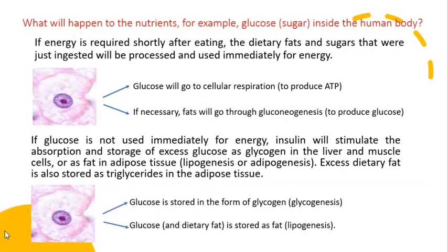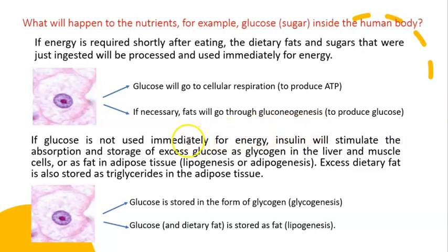What happens to nutrients such as glucose or sugar inside the human body? Shortly after eating, dietary fats and sugars that were just ingested will be processed and used immediately for energy. Glucose will go to cellular respiration to produce ATP; if necessary, fats will go through gluconeogenesis to produce glucose. If glucose is not used immediately, insulin will stimulate the storage of excess glucose as glycogen in the liver and muscle cells.